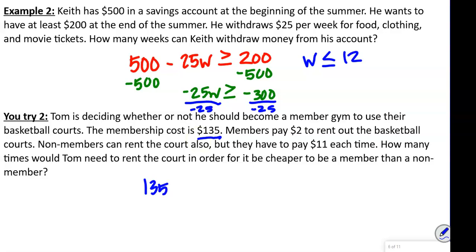So the membership costs $135 plus $2 times R for renting. Non-members pay $11 each time. We want to find when it's cheaper to be a member, so we write: 135 plus 2R is less than or equal to 11 times R.